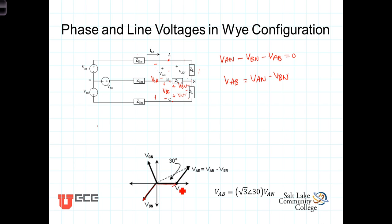VBN lags VAN by 120 degrees. So, we can get VAB by taking VAN and subtracting from it VBN. So, here's VAN, here's VBN.